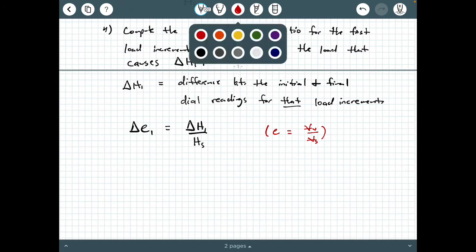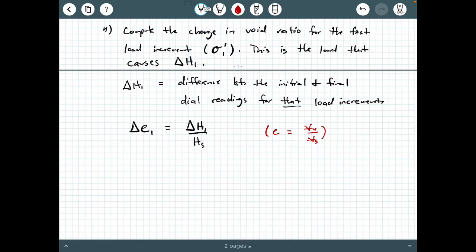How do we calculate the new void ratio? E1 is going to be the new void ratio, which equals E0 minus this delta E1 that we just computed.